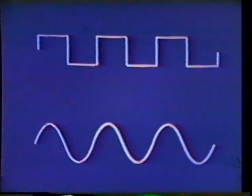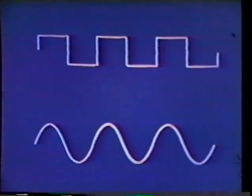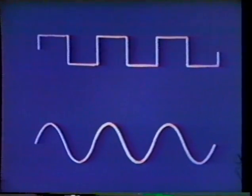To estimate how well the sine wave represents the square wave, we can superimpose one on the other. The approximation is only fair — the error is about 19%.